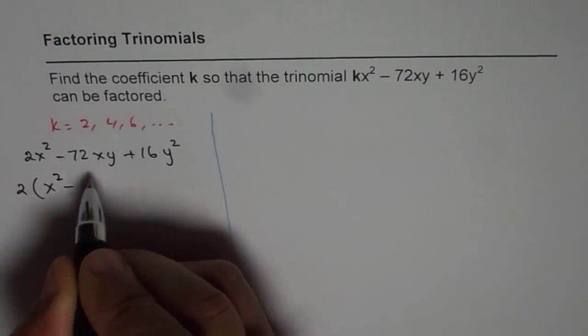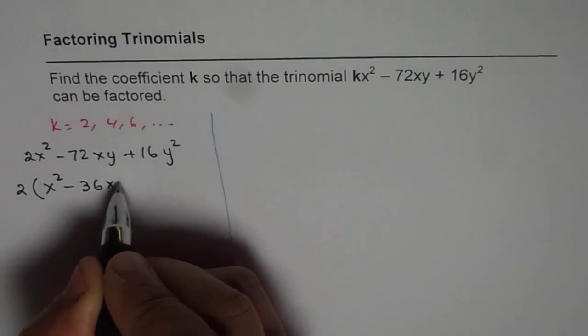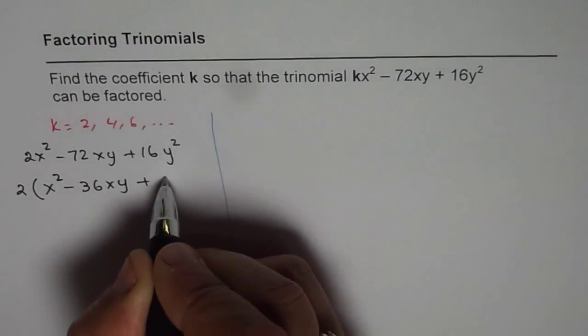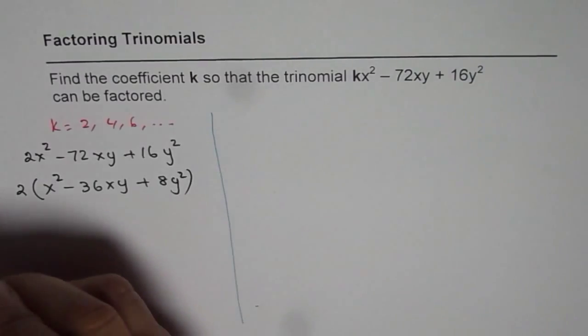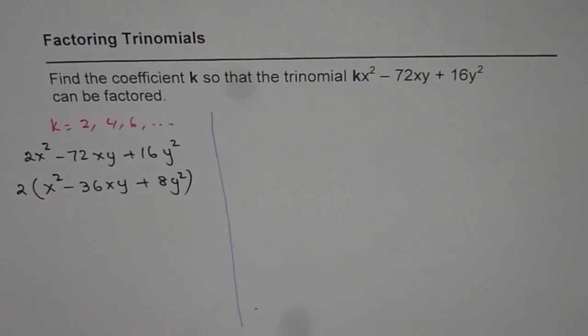So we get this and this is 36xy + 8y². The factoring has been done. Or any even number for that matter, we can take k.